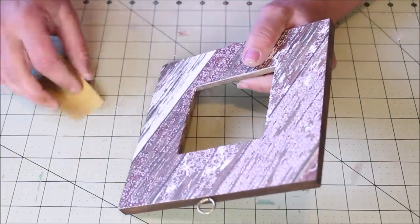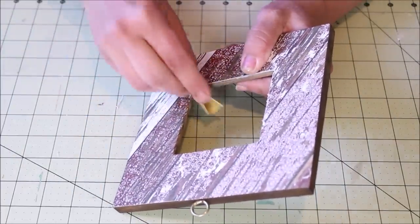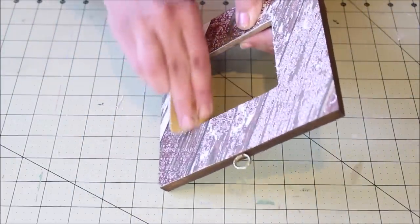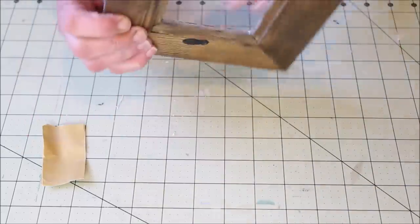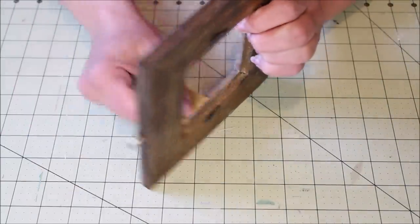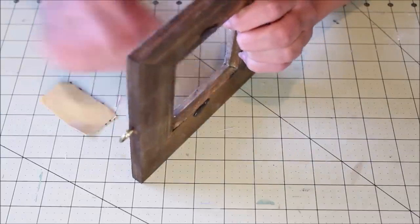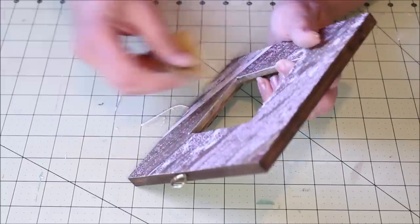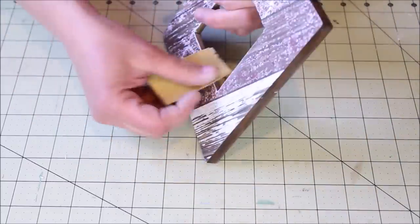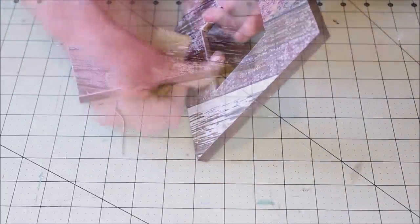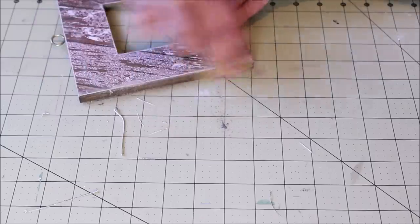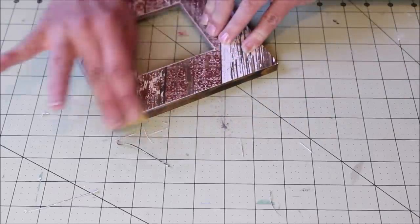And I liked the way that it distressed the edge of the paper, so I went ahead and continued sandpapering around the whole inside edge of the frame. I repeated the process along all four outer edges as well.